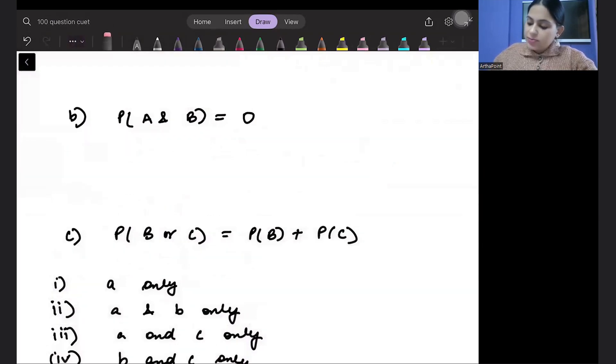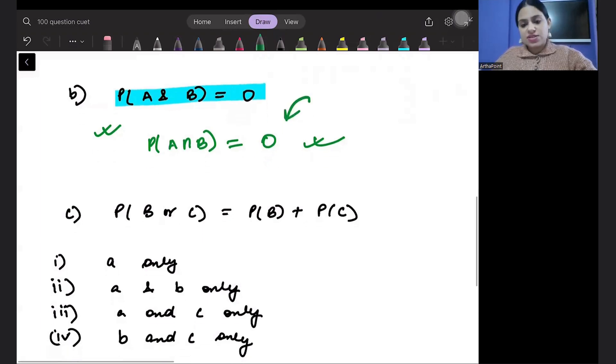The next option is saying that probability A and B is zero. Yes, A intersection B is zero. And this is true because they are mutually exclusive, meaning there is nothing common. So their intersection should be zero. That's correct.